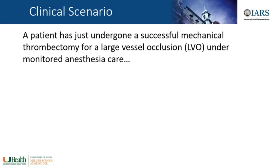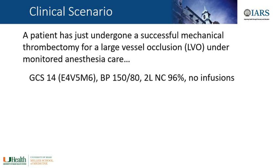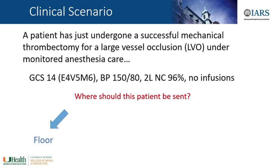Starting with a common clinical scenario: a patient has just undergone a successful mechanical thrombectomy for a large vessel occlusion under monitored anesthesia care. He or she has a GCS of 14, blood pressure of 150 over 80, is on minimal oxygen at 96%, and has no infusions running. So you finish the case and discuss where to send this patient. The options are floor, which is unlikely, a stroke unit, or the ICU.